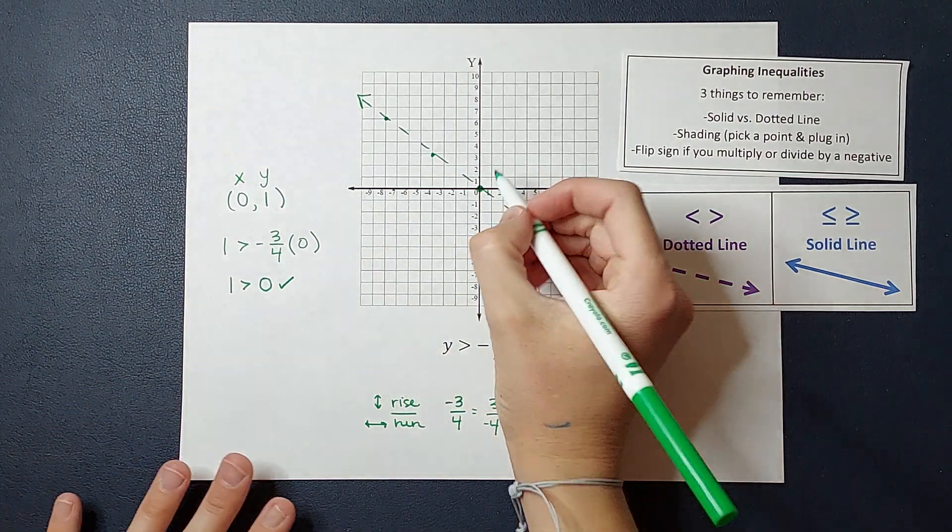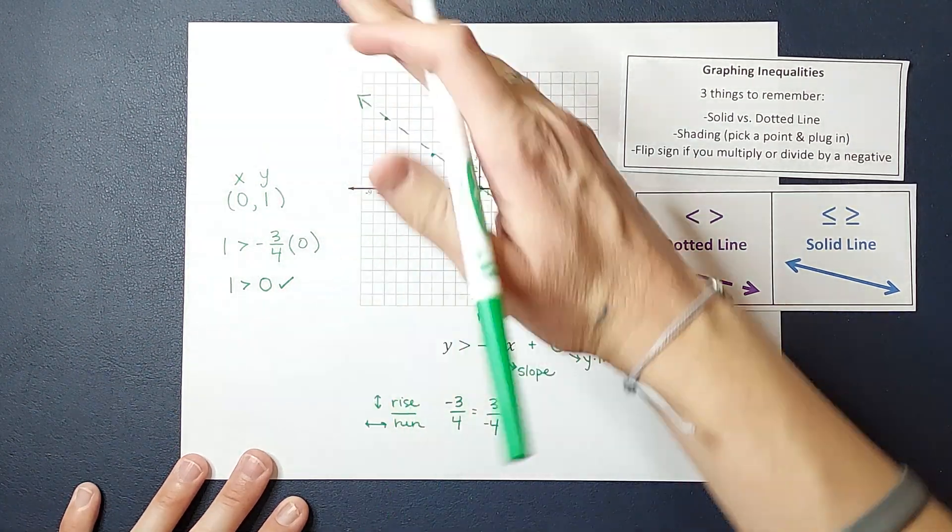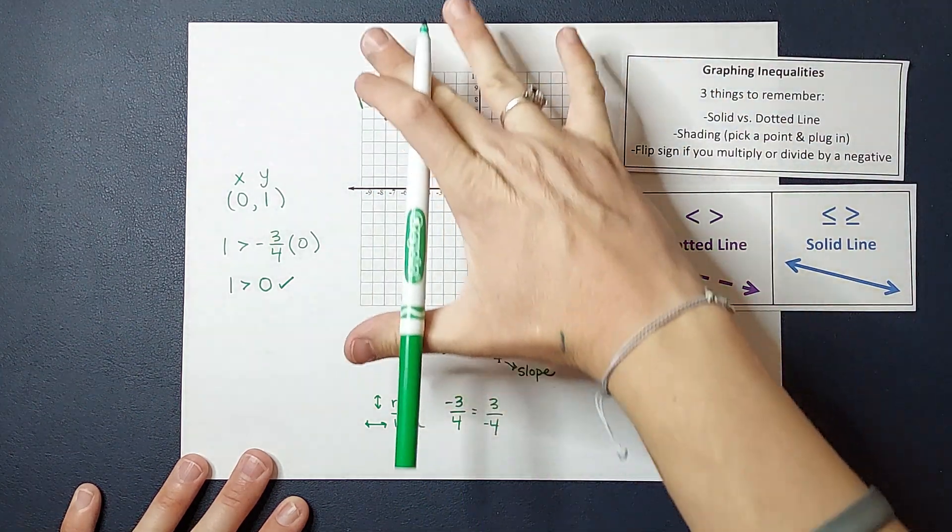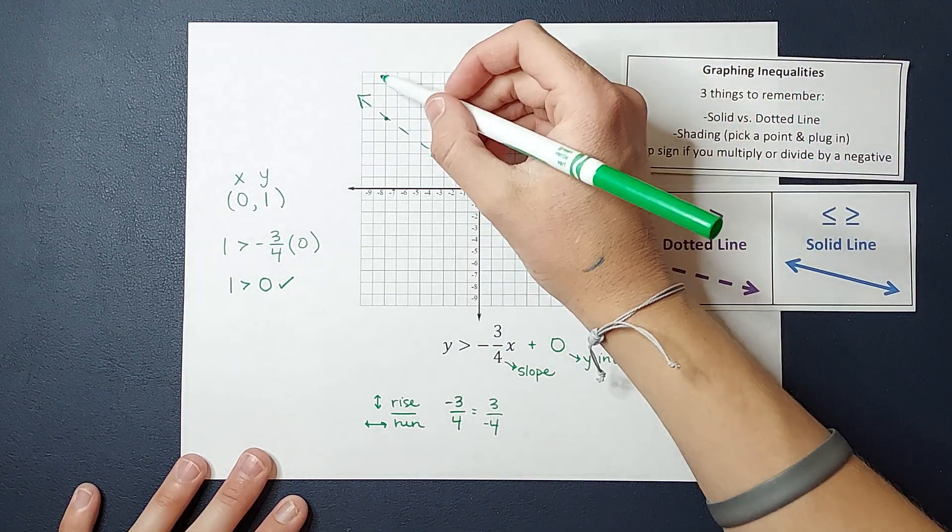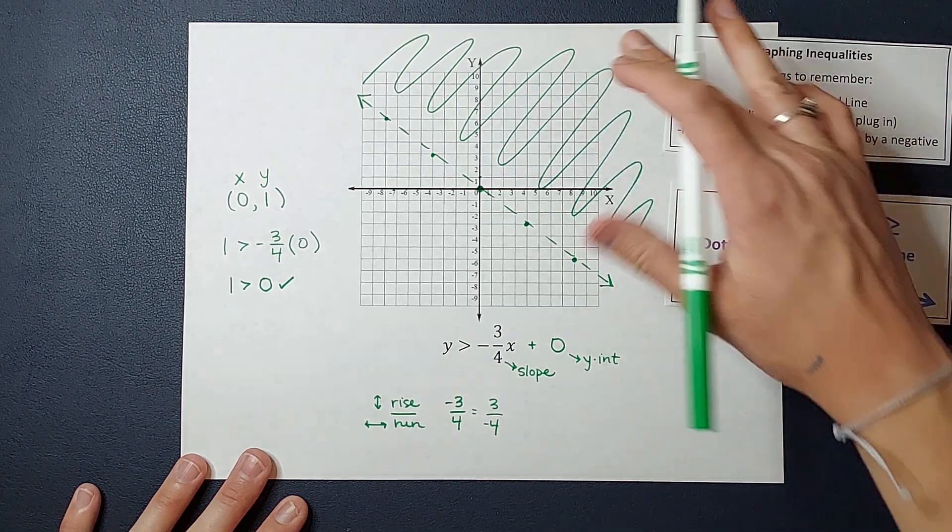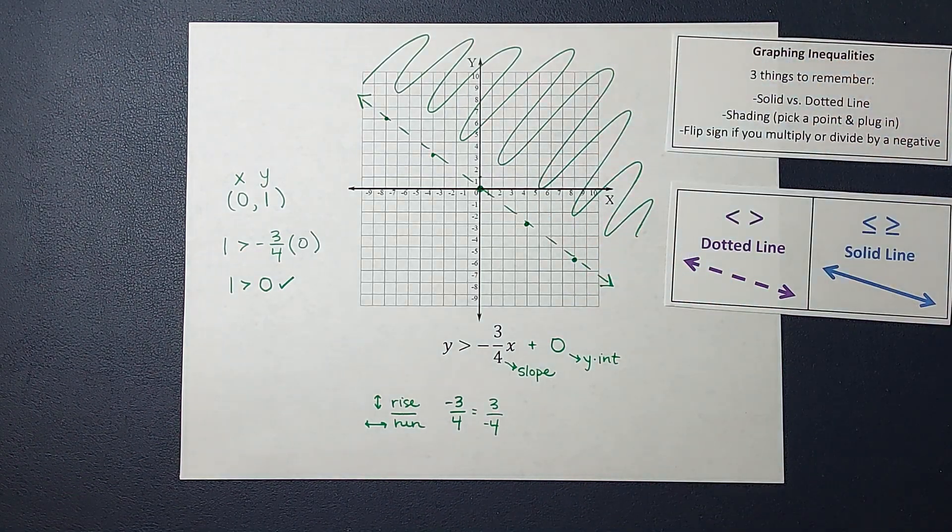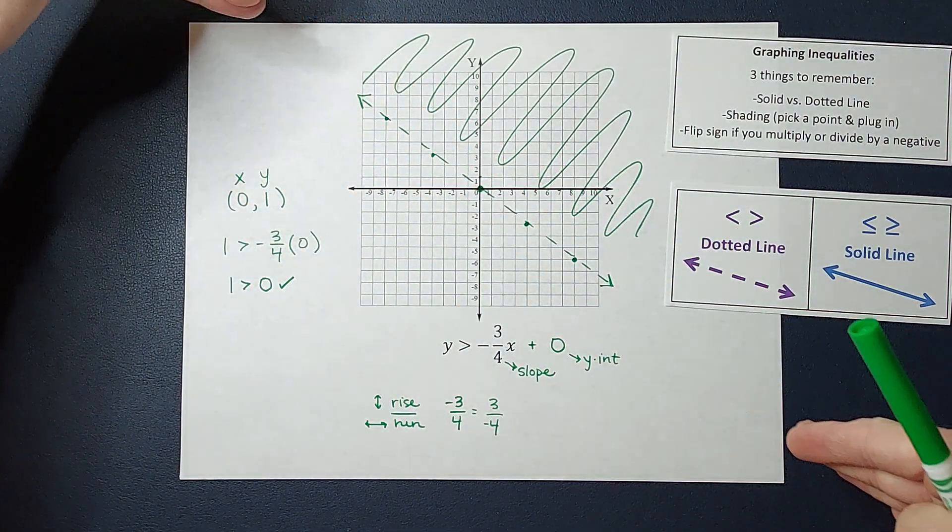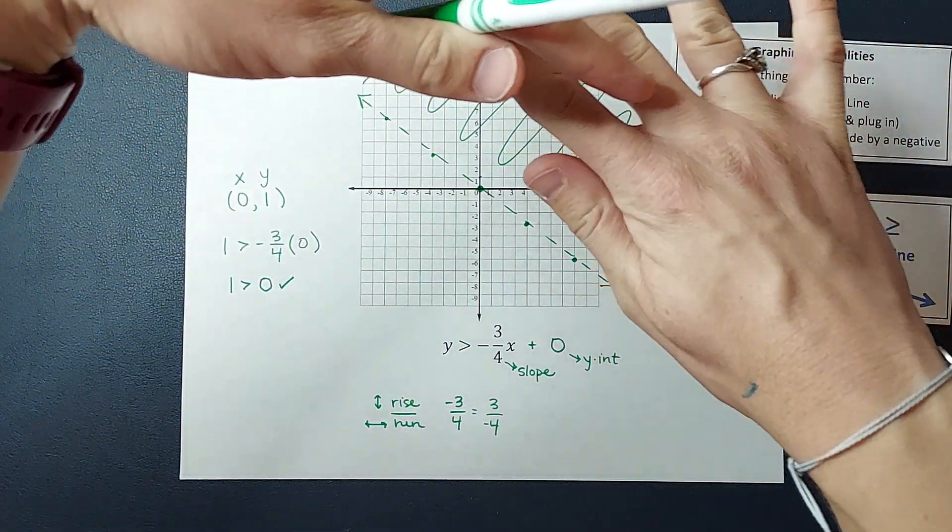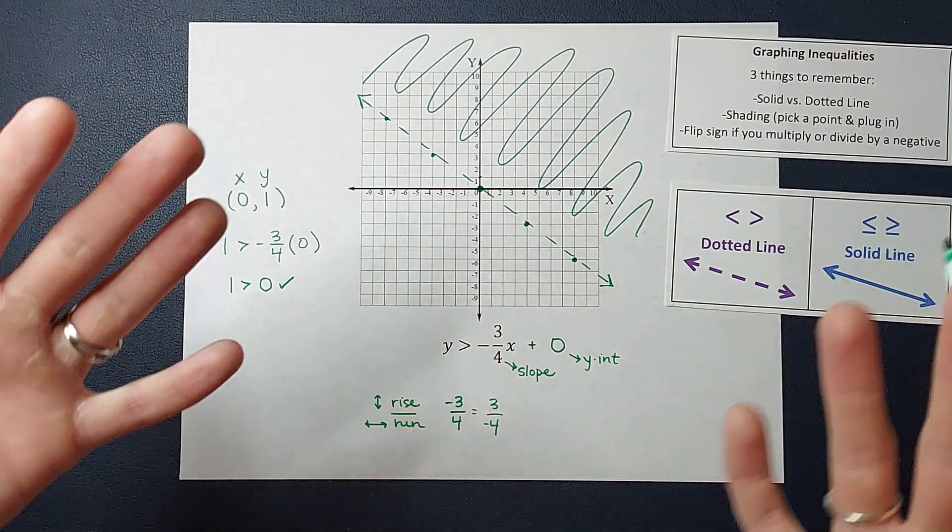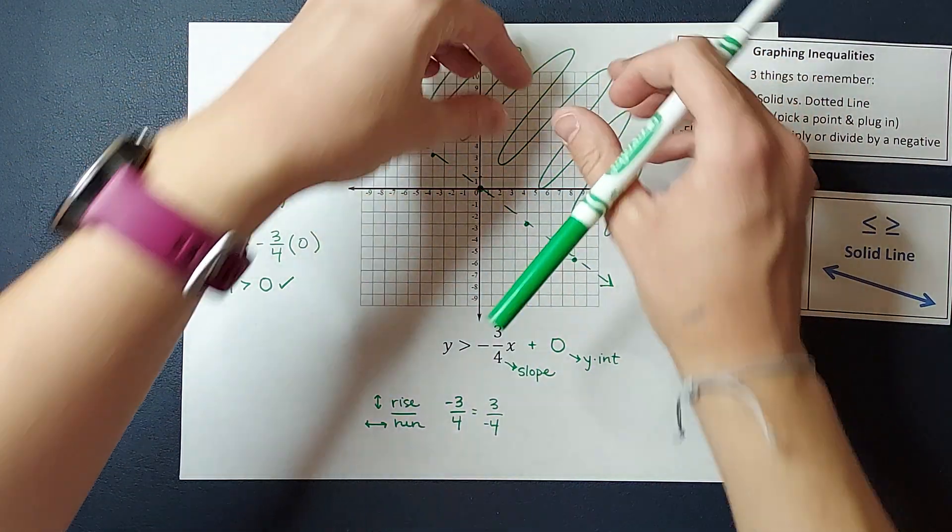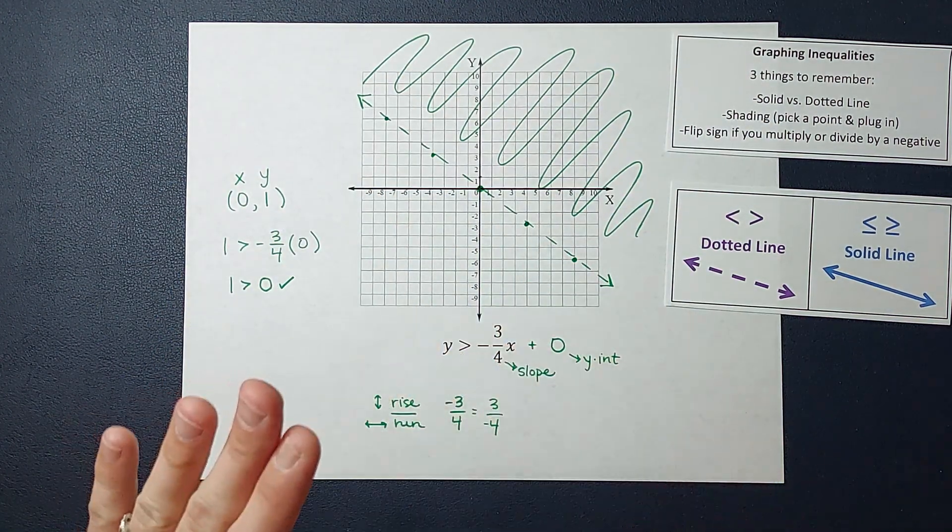So the point I plugged in was here, it was above the line, and it was true. So that means any of the points on this side are going to be true. So I signify that by coloring it in over there with my beautiful coloring skills. Now I hope you can imagine that this line goes on forever, that's why I put the arrows on it. And really this shading goes on forever on that side of the line. It's kind of hard to show that, but it goes on forever on that side of the line. You could pick any point over here and it will work for this inequality.